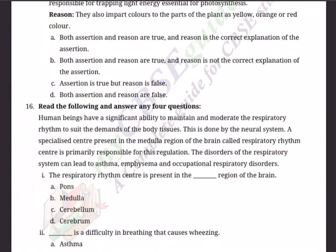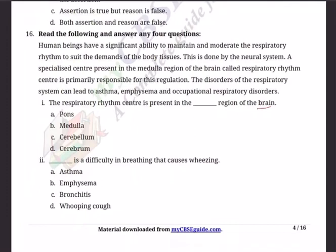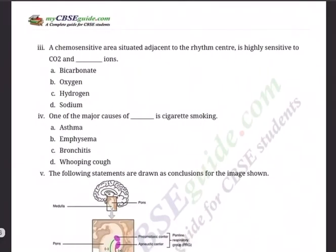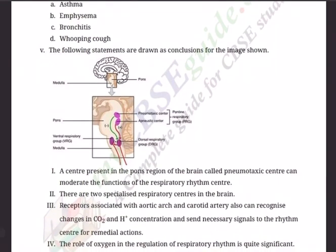Q16 Sub-questions (answer any four): (1) The respiratory rhythm center is present in the ___ region of the brain — (A) pons, (B) medulla, (C) cerebellum, (D) cerebrum. (2) ___ is a difficulty in breathing that causes wheezing — (A) asthma, (B) emphysema, (C) bronchitis, (D) whooping cough. (3) A chemo-sensitive area situated adjacent to the rhythm center is highly sensitive to CO₂ and ___ ions — (A) bicarbonates, (B) oxygen, (C) hydrogen, (D) sodium. (4) One of the major causes of ___ is cigarette smoking — (A) asthma, (B) emphysema, (C) bronchitis, (D) whooping cough.